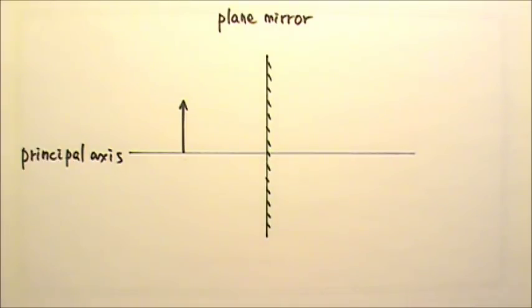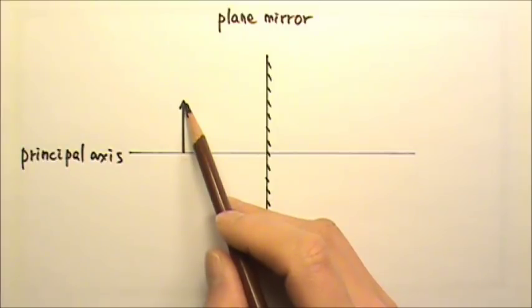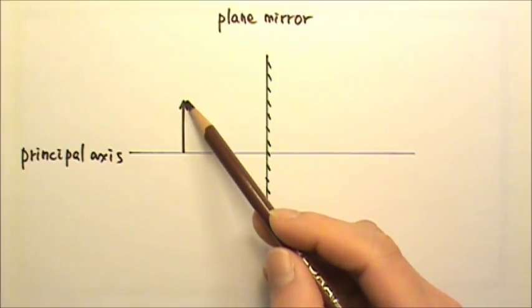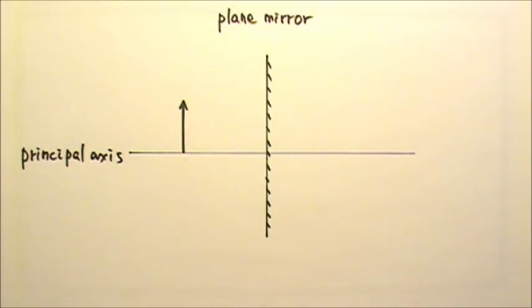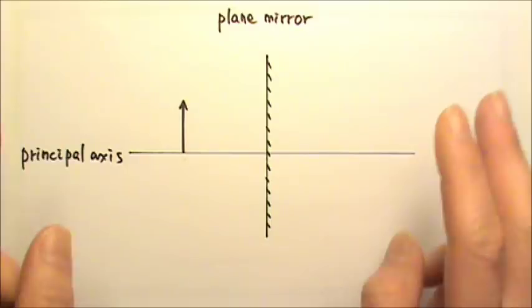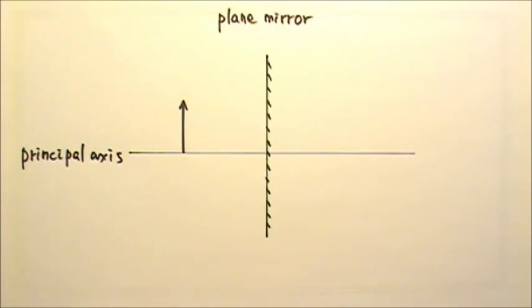Usually we start by finding the image of the tip of the arrow. The tip of the arrow sends light rays out in all directions. But all we need are two rays, so we can just choose certain special, easier rays to follow.